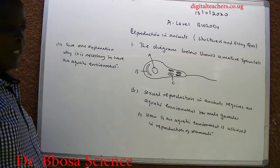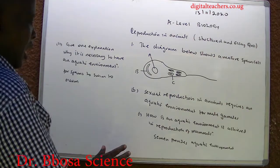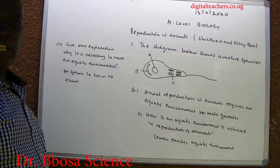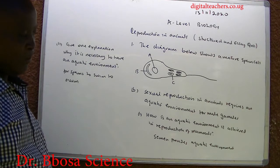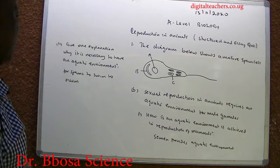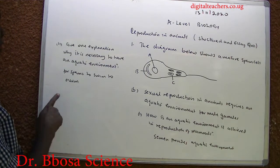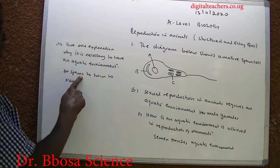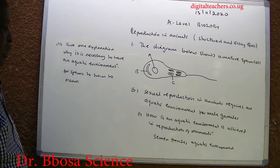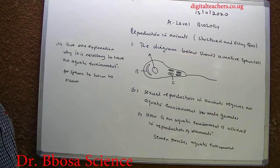You can pause and answer. An aquatic environment is provided by the reproductive fluid. How is the aquatic environment achieved for sperm to swim?